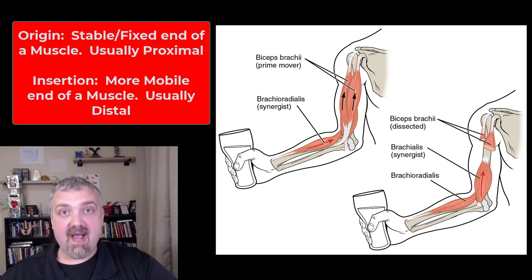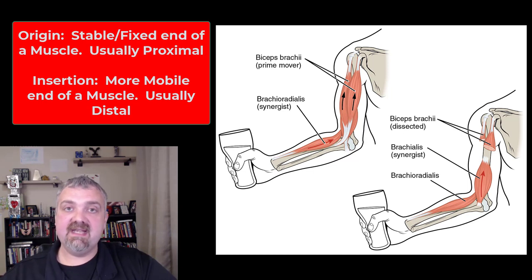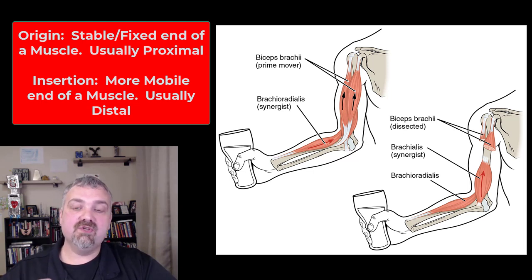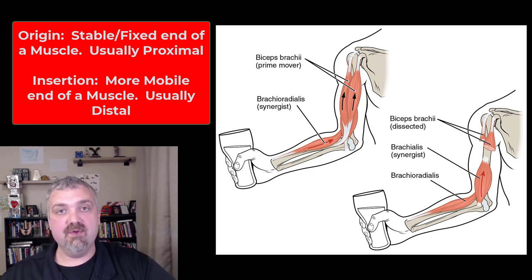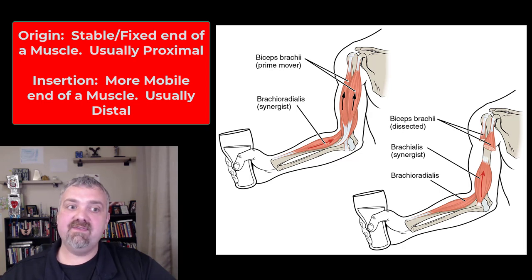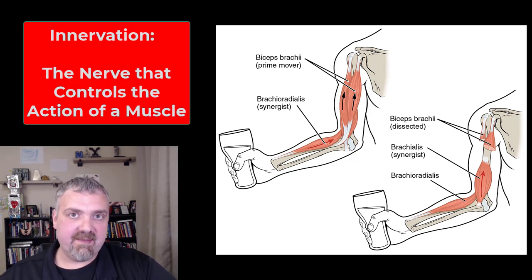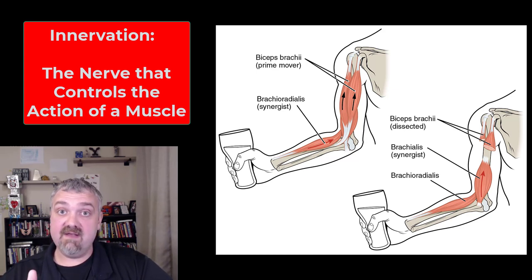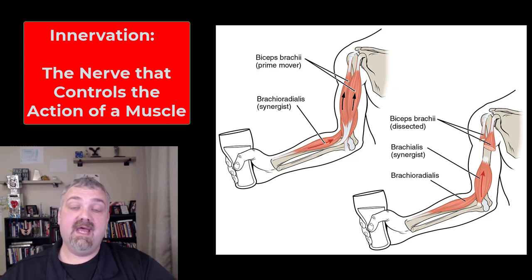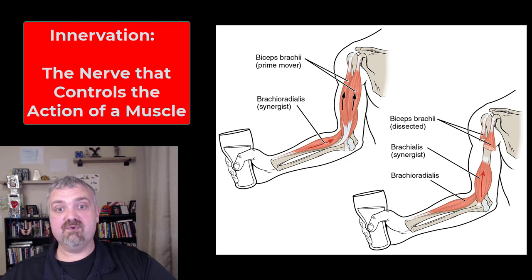Another hint: almost always the origin is usually proximal and the insertion is going to be distal. So that's how you tell the difference between an origin and insertion — they're both attachment points, and whichever end is moving more is the insertion. Innervation is just which nerve controls that muscle. I'm not asking you to know that at this level right now, but I will come back through and explain the individual nerves that control individual muscles.